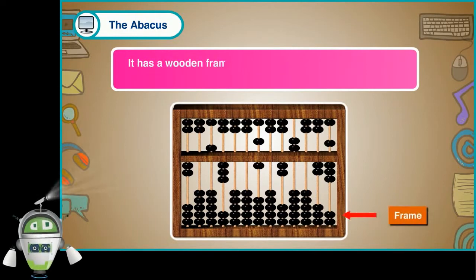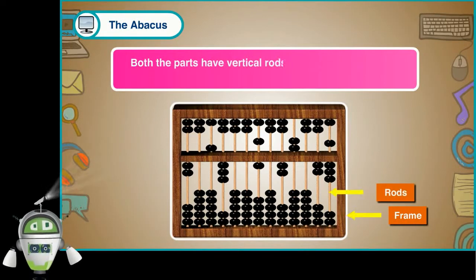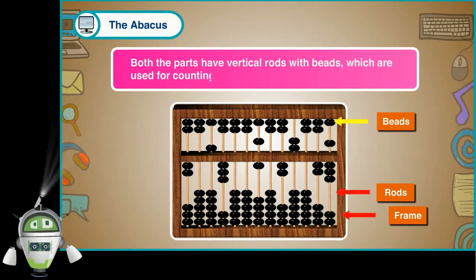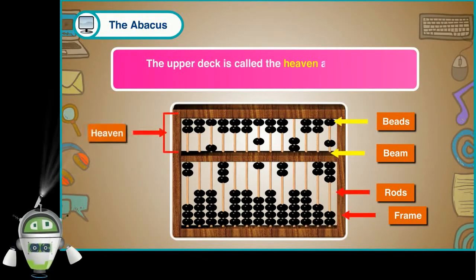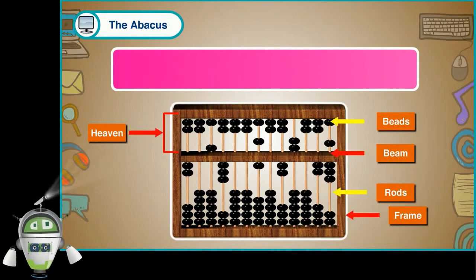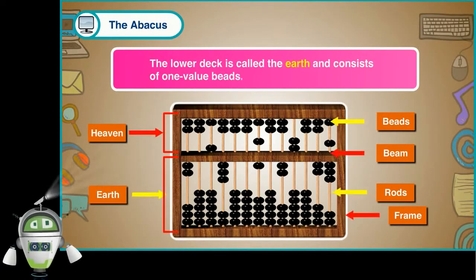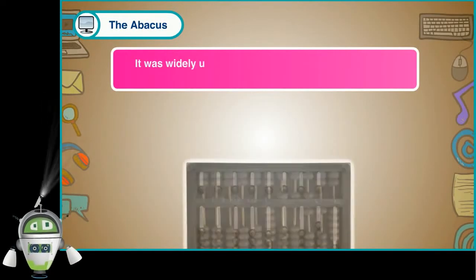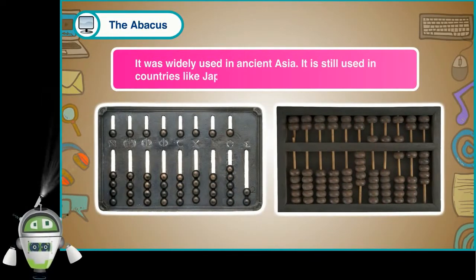It has a wooden frame which is divided into two parts by a horizontal beam. Both the parts have vertical rods with beads which are used for counting and calculating. The upper deck is called the heaven and consists of five-value beads. The lower deck is called the earth and consists of one-value beads. It was widely used in ancient Asia. It is still used in countries like Japan and China.